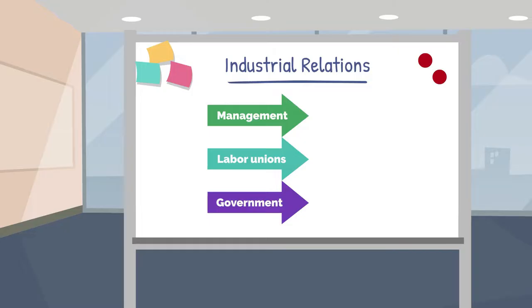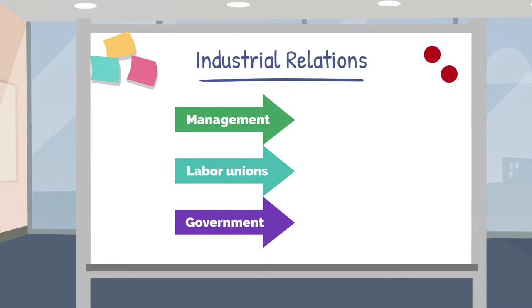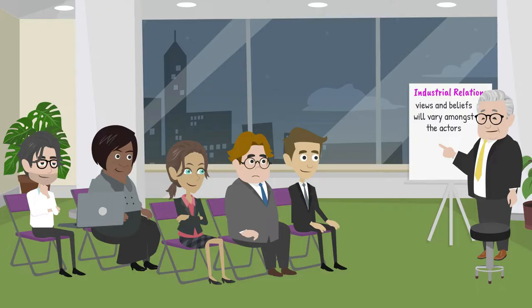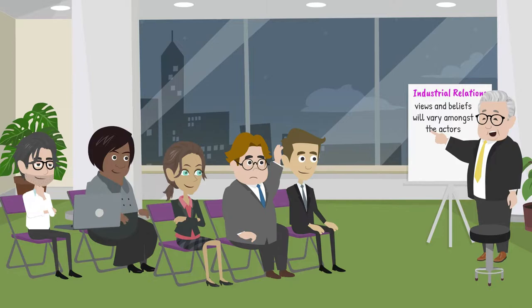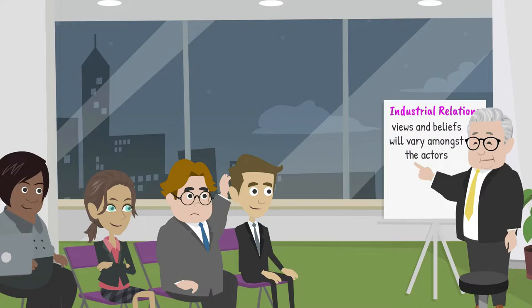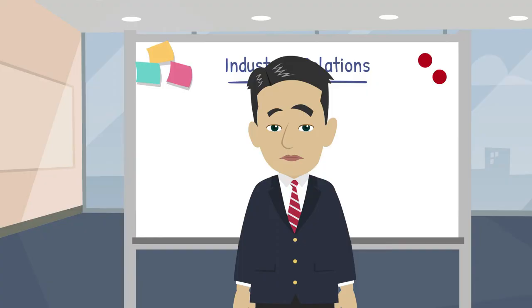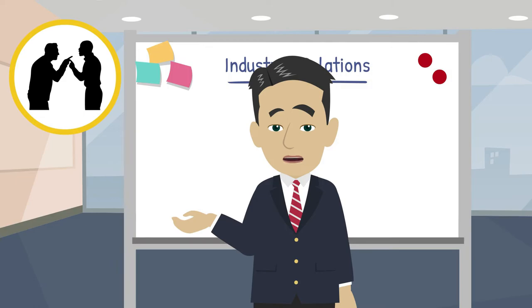Dunlop believed that all these actors have a common set of beliefs, and this is what ties the system together. However, few persons have criticized this view, stating that views and beliefs will vary amongst the actors — that is why conflict exists in the industrial relations system. In fact, everyone is motivated differently, which can ultimately affect relationships within the workplace.